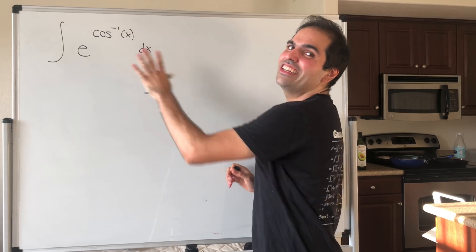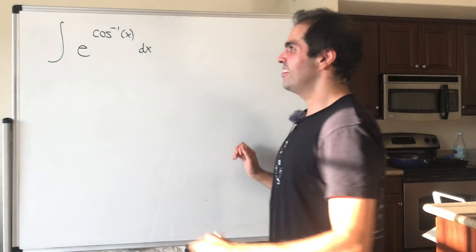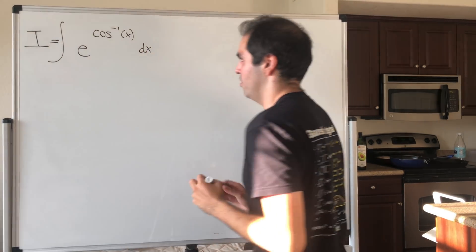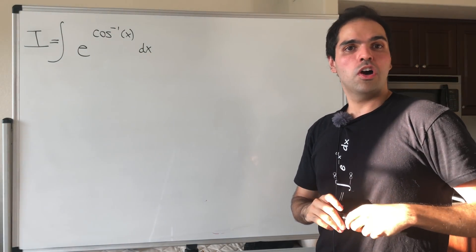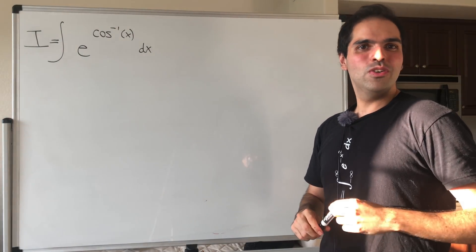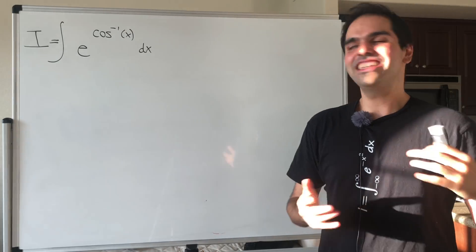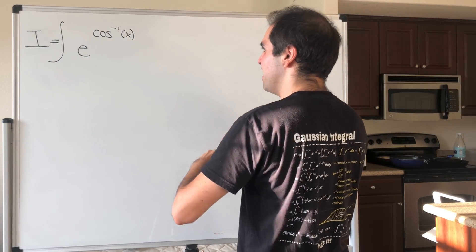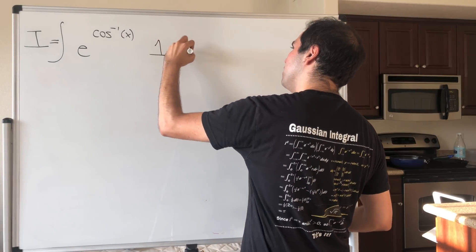The solution is actually very similar to the Gaussian integral. So let I be the integral of e to the arc cosine of x. Now, if you try u-substitution, it'll give you a big mess. So what do we do? We integrate by parts. Notice this is e to the arc cosine of x times 1 dx.